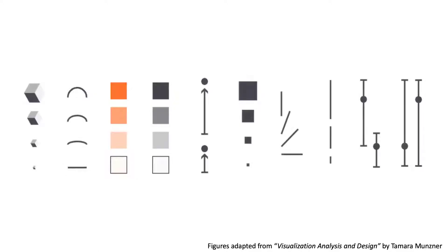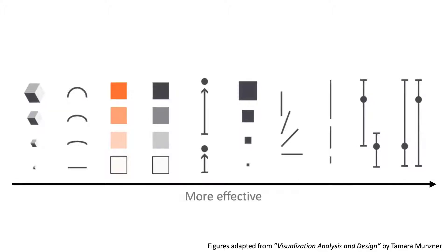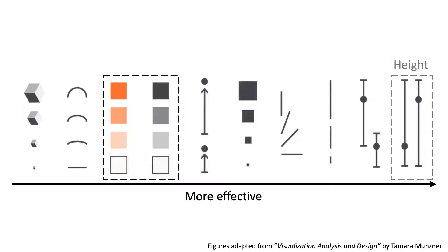But there are other ways to encode numeric values, and some encodings are more effective than others. We can see from this chart that color is not the most effective encoding for numeric values — the most effective is height.